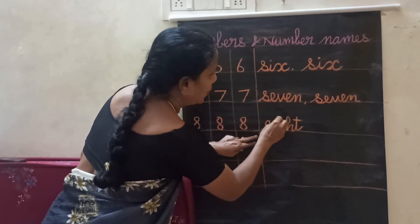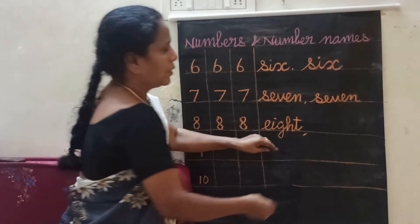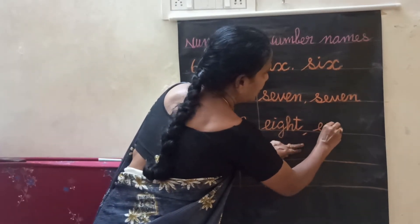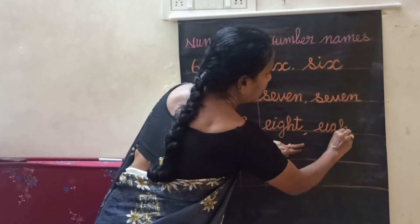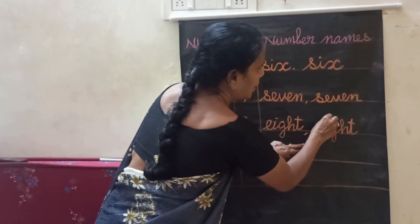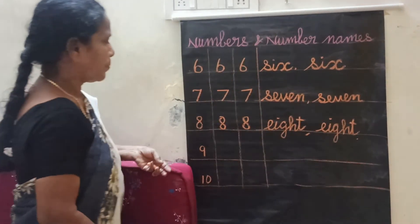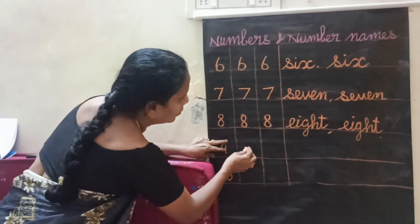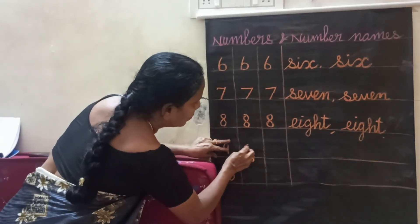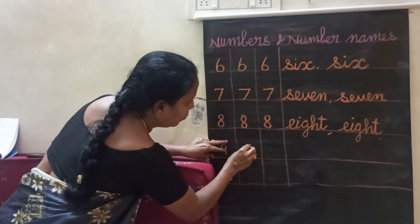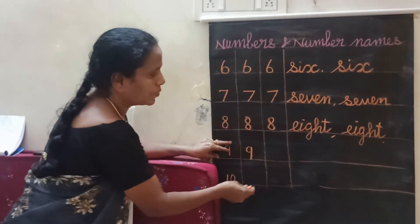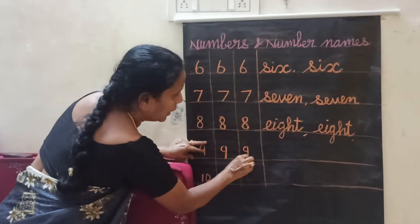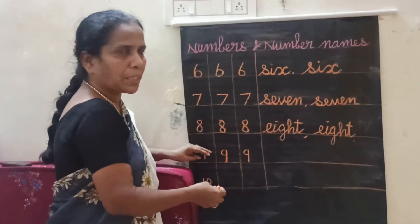E, I, G, H, T. Number 9. Number 9, 1 curve. And 1 standing line. 1 curve. 1 standing line. Number 9.